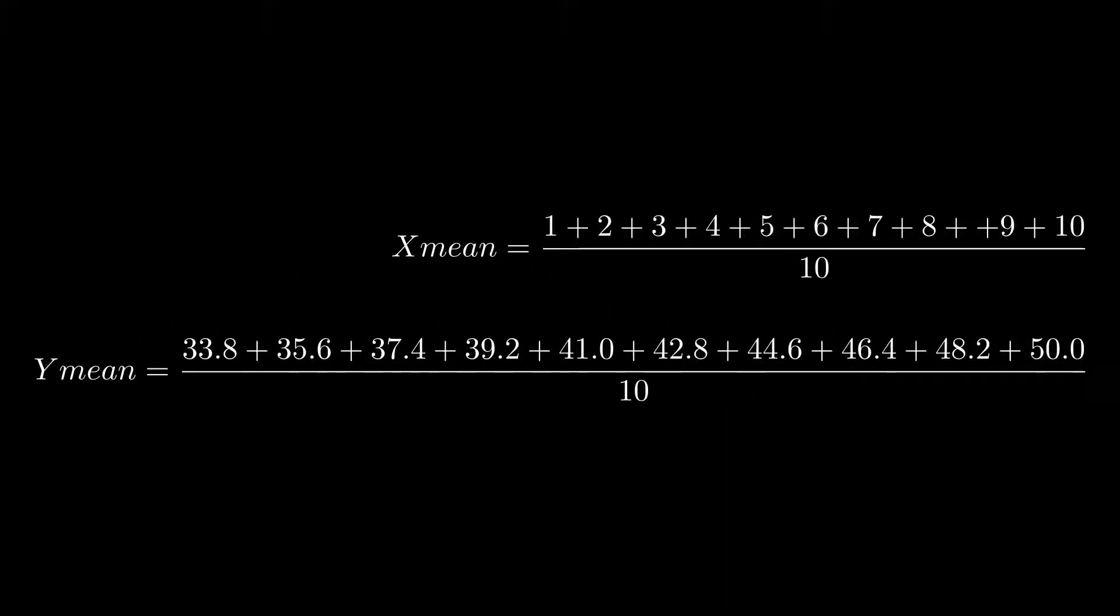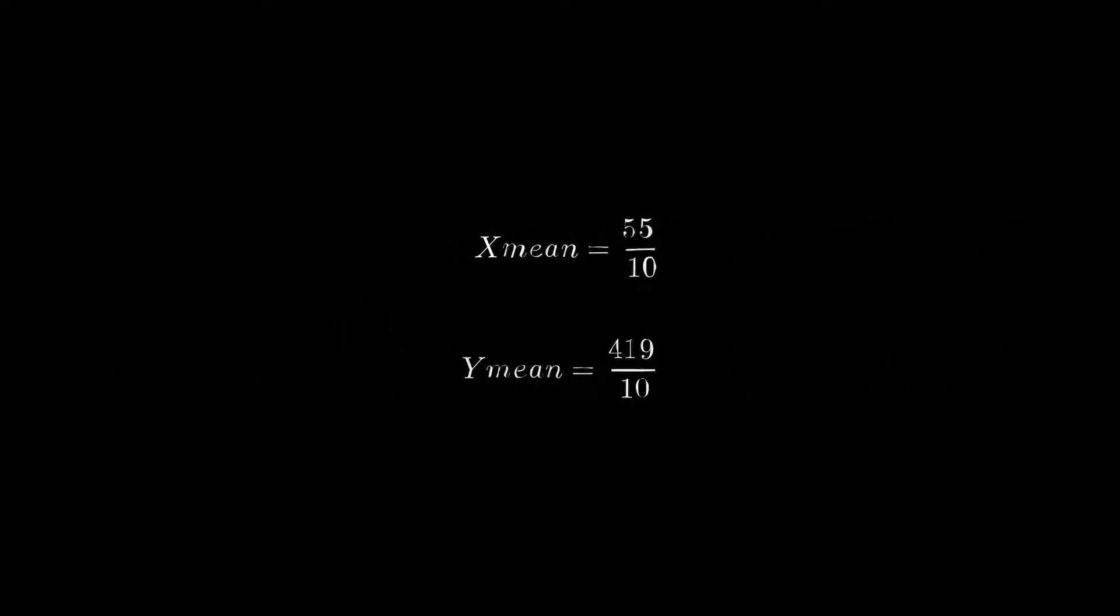Now we will calculate x mean and y mean, which can be done by summing all the values and dividing by the total number of values which is 10. We have got x mean equals 5.5 and y mean equals 41.9. We are now all set to calculate slope and y-intercept.